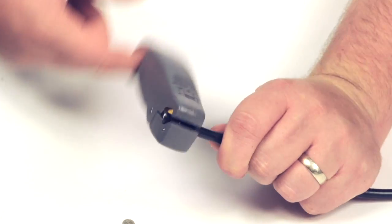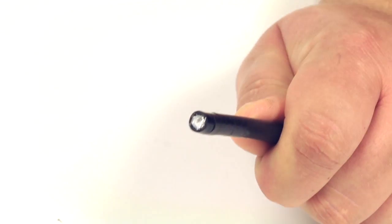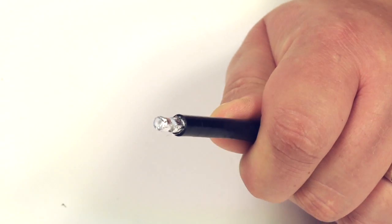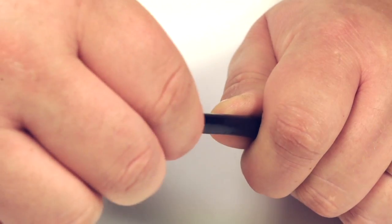Start by stripping back the jacket using the strip tool. The jacket should be stripped about half an inch and the dielectric down to about a quarter of an inch.